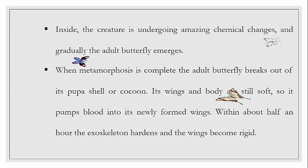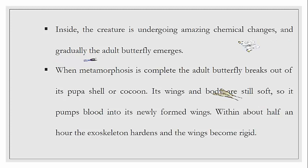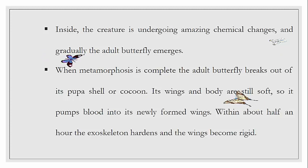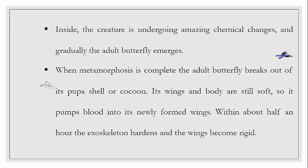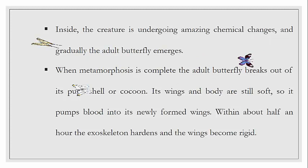When the metamorphosis is complete, the adult butterfly breaks out of its pupa shell and cocoon. Its wings and body are still soft at first, because it must pump blood into its newly formed wings. Within about half an hour after emerging from the shell, its exoskeleton becomes harder and the wings become rigid and strong, ready for flight.